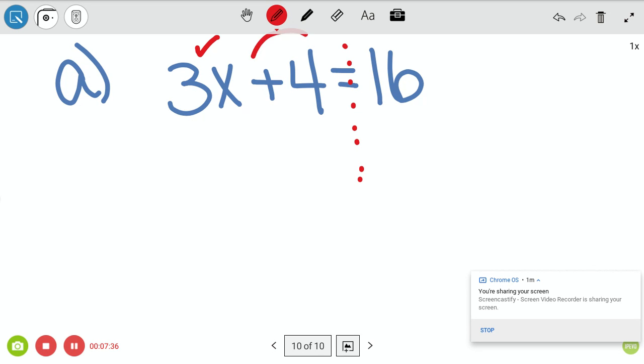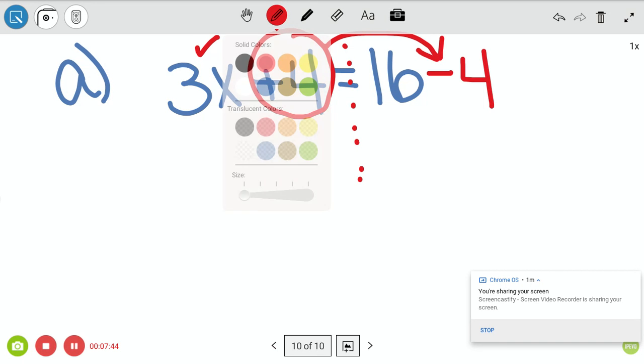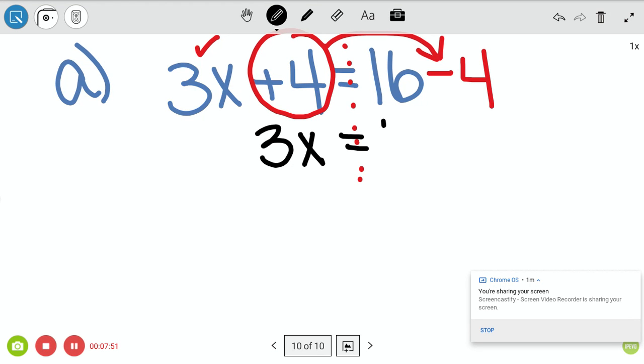Now this positive 4, we actually want to move it over. So if we want to move it over, just like we did the other day, we're going to make it a negative 4. And then we write what's left. So if we move this over, we just have 3x equals. Now on the other side, it's 16 minus 4, which is 12.